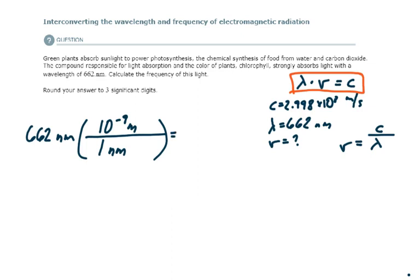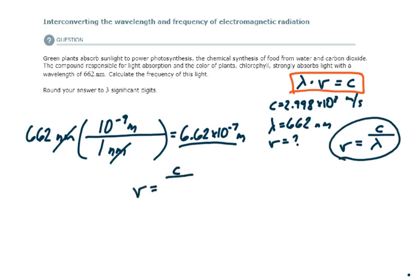So that will give me a very small number of 6.62 times 10 to the minus 7 meters. My units here cancel out. So now that I have this value converted to meters, I can plug it straight into this formula where the frequency is equal to the speed of light divided by the wavelength.